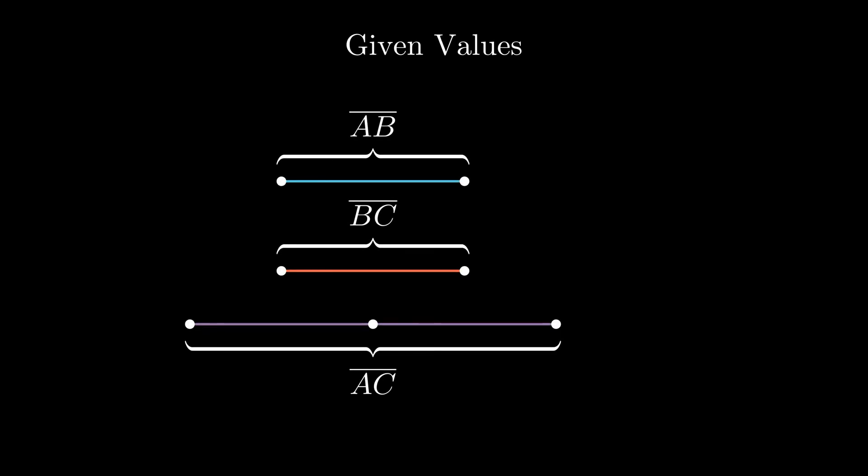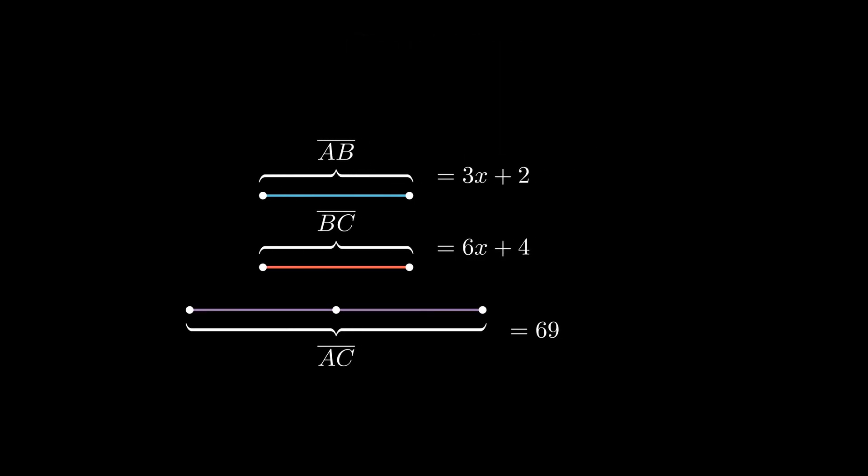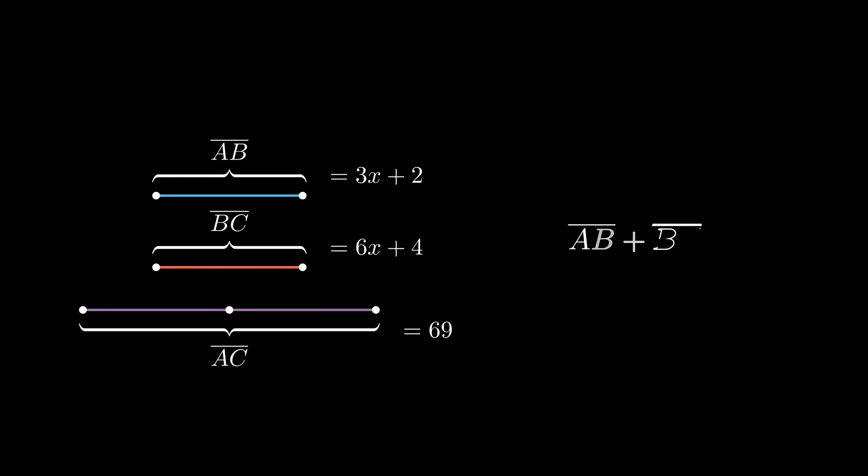We know that the length of line segments AB and BC are 3x plus 2 and 6x plus 4, respectively. We also know the total length of line segment AC, which is 69. Now we can plug in our values into the postulate to get 3x plus 2 plus 6x plus 4 equals 69.